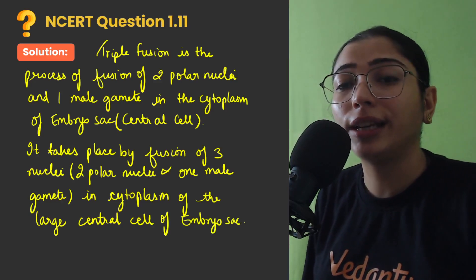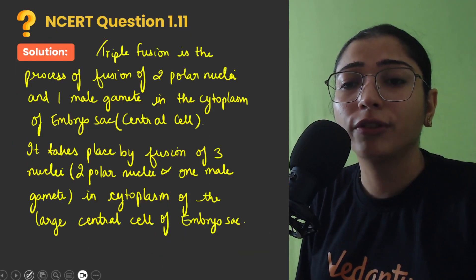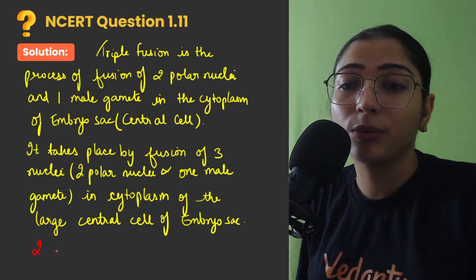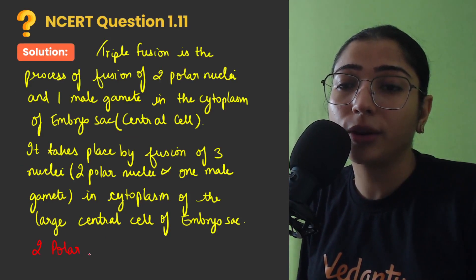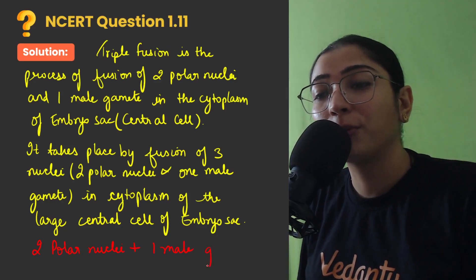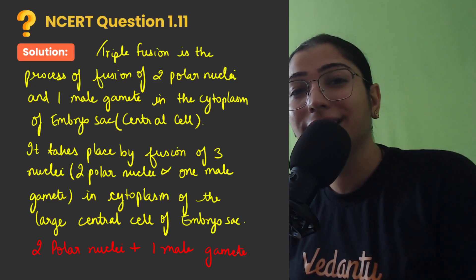What are the 3 nuclei involved? They are asking you, name the nuclei involved in triple fusion. So we have named it already many times, but we will write it again, that it involves fusion of 2 polar nuclei and 1 male gamete. So I hope this concept of triple fusion is clear to you now, and you can answer this question clearly.